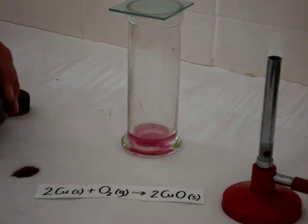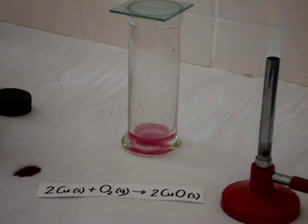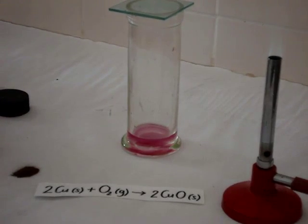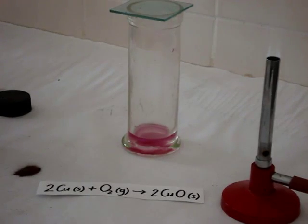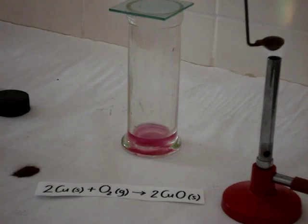We place some copper powder in a deflagrating spoon. The reason why we use copper powder rather than a piece of copper metal is because the greater surface area that the copper powder provides causes it to react faster.